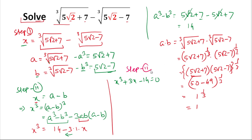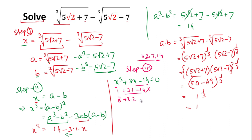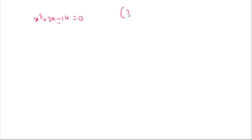Now we'll calculate x by factorizing. The constant term is 14, with factors 1, 2, 7, 14. Testing x = 1: 1 + 3 − 14 ≠ 0, does not satisfy. Testing x = 2: 8 + 6 − 14 = 0, which satisfies. So one factor is (x − 2). We now divide x³ + 3x − 14 by (x − 2).